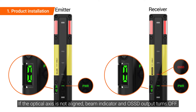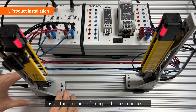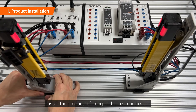If the optical axis is not aligned, the beam indicator and OSSD output turn off. Install the product referring to the beam indicator to correct alignment.